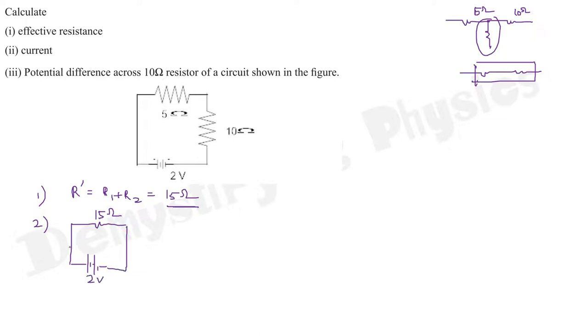Now let's find current. Using Ohm's law, I = V/R = 2/15 ampere.